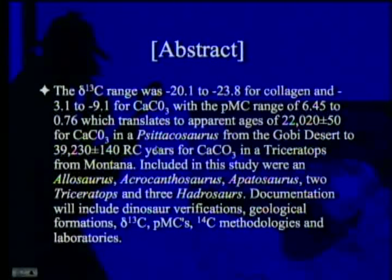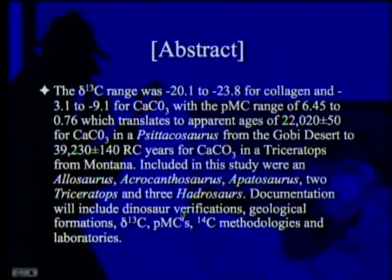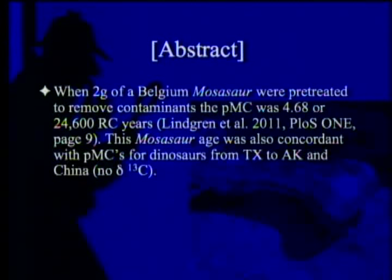That's how they got those ages for a Triceratops from Montana. Included in this study were an Allosaurus, an Acrocanthosaurus, an Apatosaurus, two Triceratops, and three Hadrosaurs. Documentation includes dinosaur verifications, geological formations, Delta-13C, percent modern carbon, carbon-14 methodologies, and the laboratories that actually did this. When two grams of a Belgian Mosasaur were pre-treated to remove contaminants, the percent modern carbon was 4.68% — or 24,600 radiocarbon years — published in 2011.